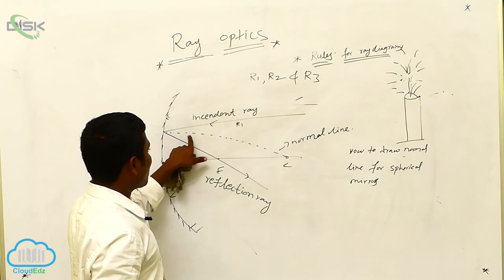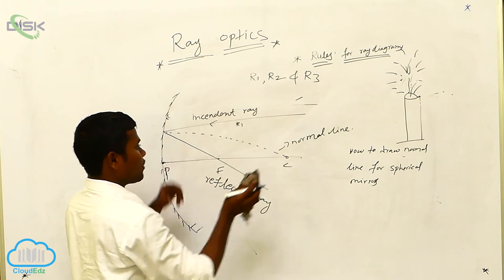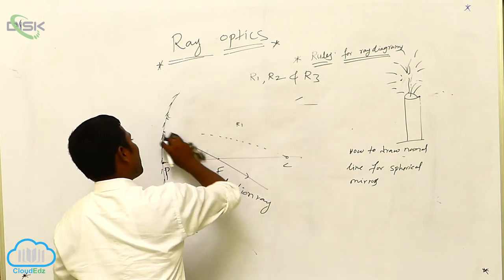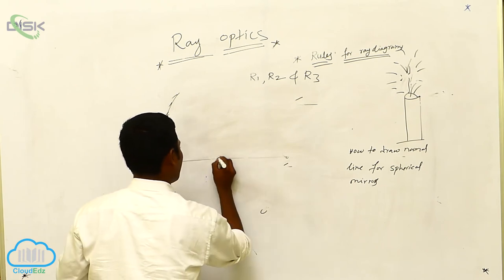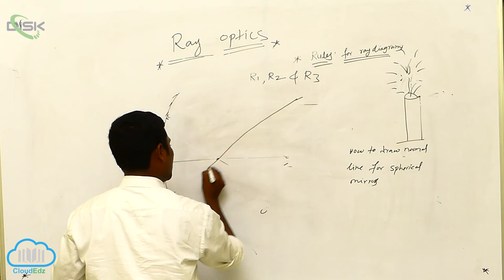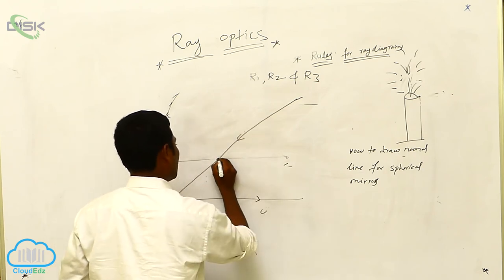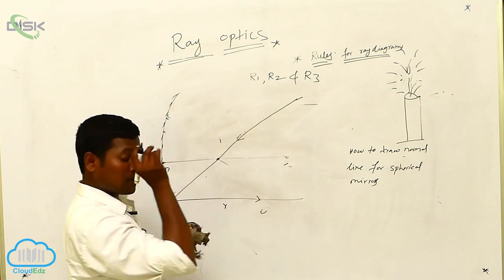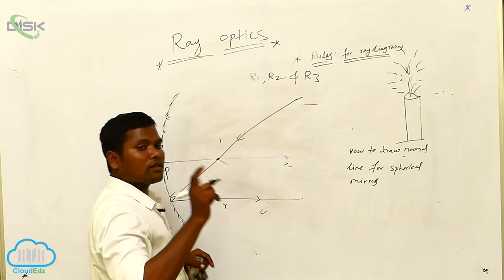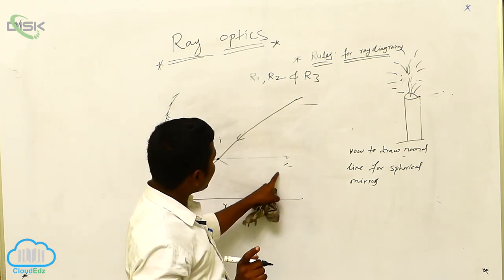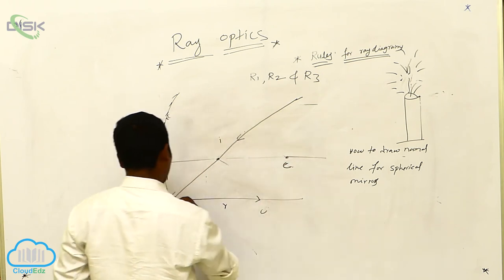All of you understood how to draw the normal line — simply you have to draw with dotted lines. Shall we see for the next one, R2? How to draw the normal line for R2? This is the R2 ray. This is the incident ray; this is the reflection ray. Here also, the same thing — the normal line definitely passes through the center of curvature.